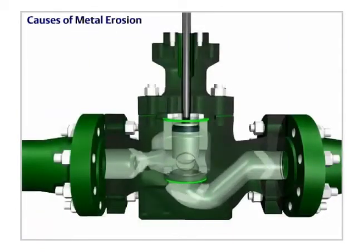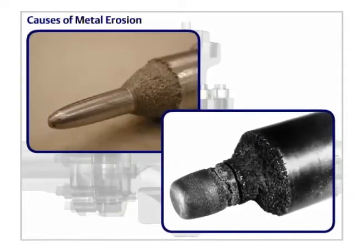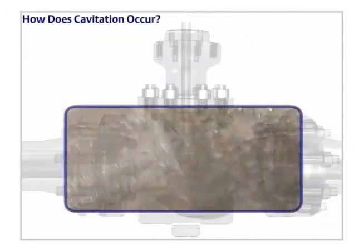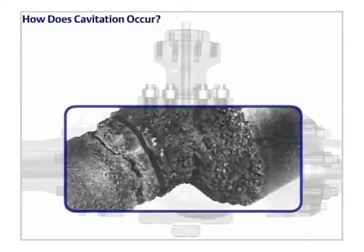Cavitation occurs when the fluid vaporizes then returns to a liquid state as the pressure increases downline. The metal damage caused by cavitation is rough and irregular due to pitting of the surface. Cavitation is a major source of damage in control valves and other components.